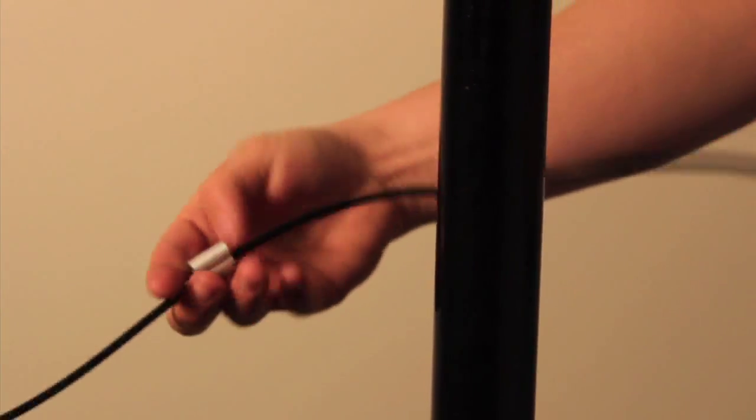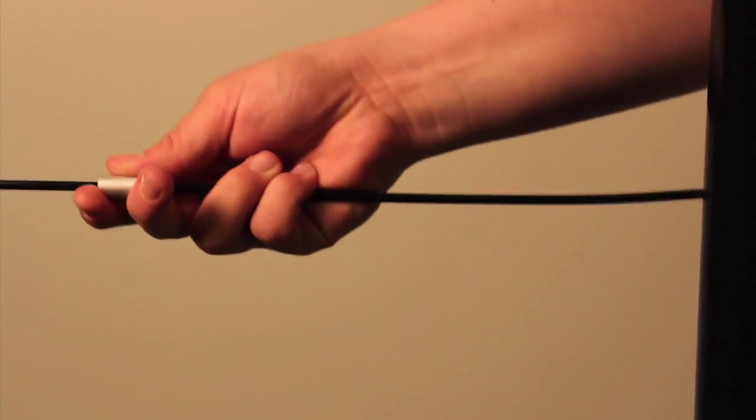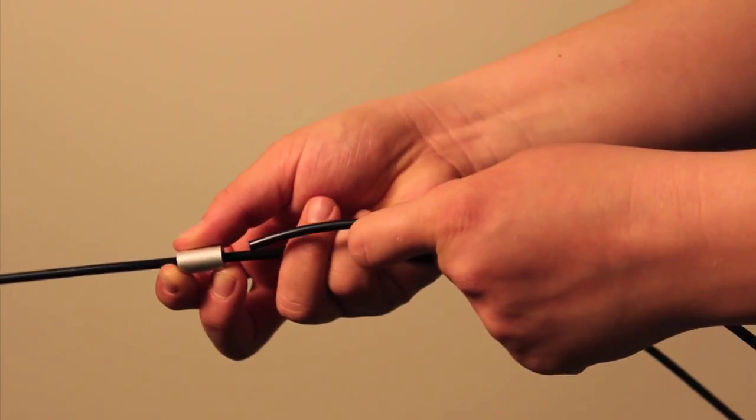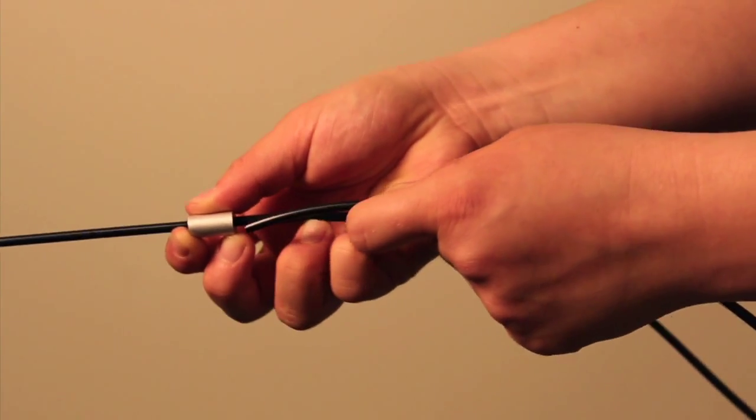Then wrap the monofilament around the post, and bring the end of the monofilament back and slide that through the opposite side of the connection sleeve.